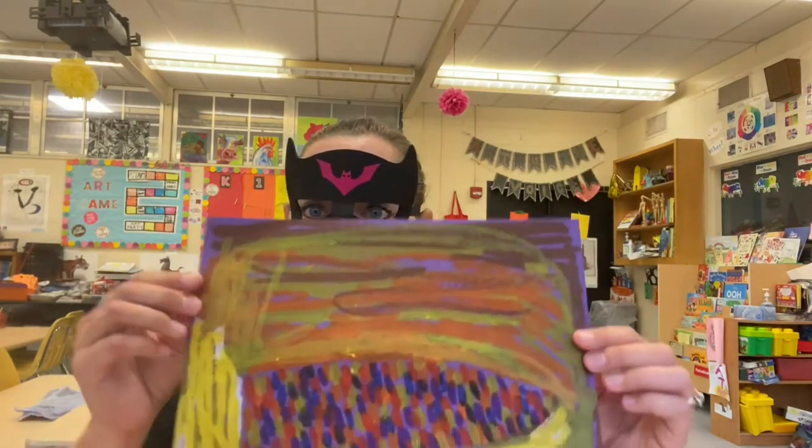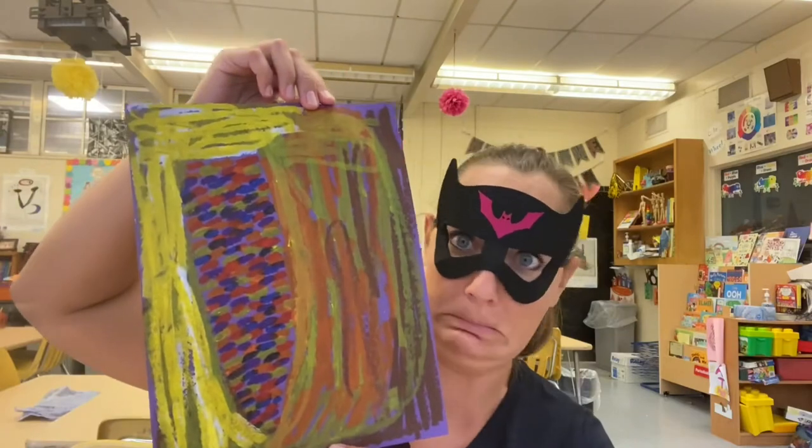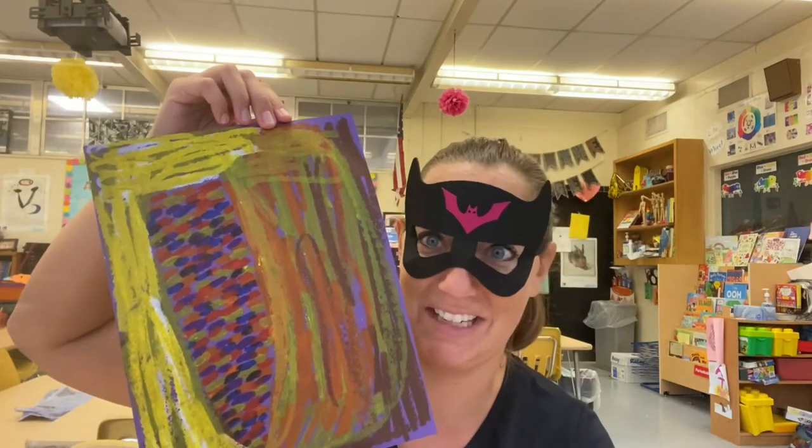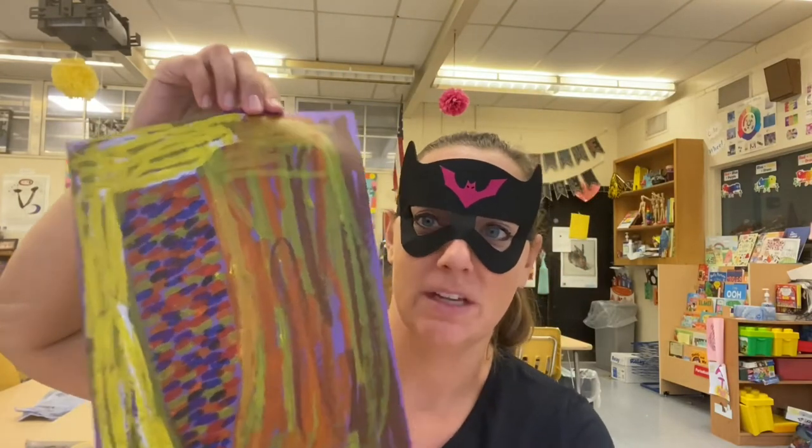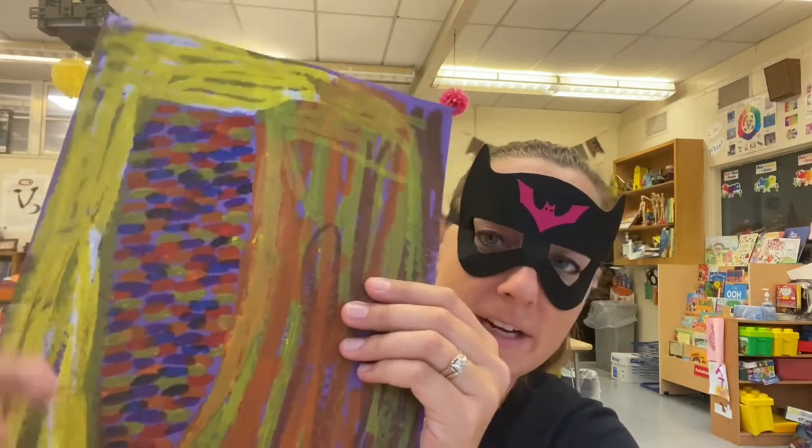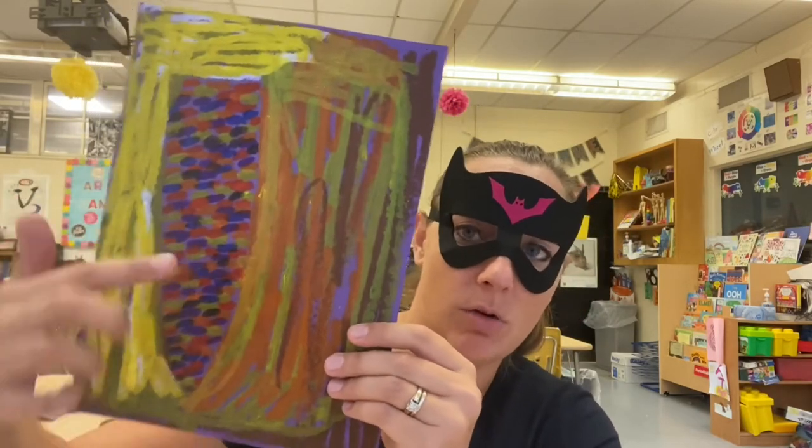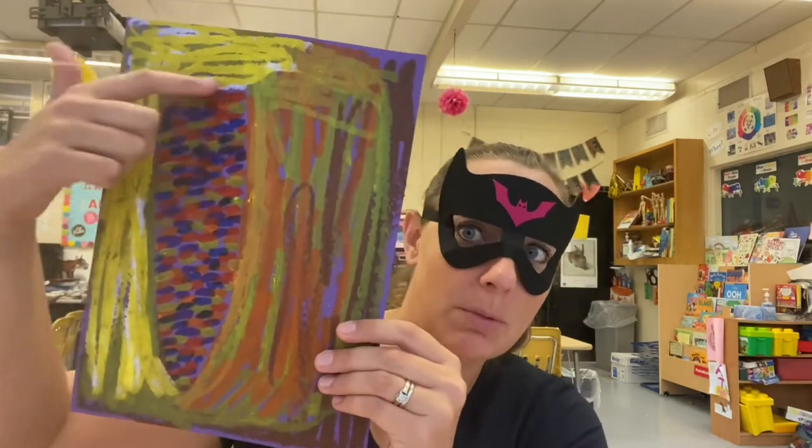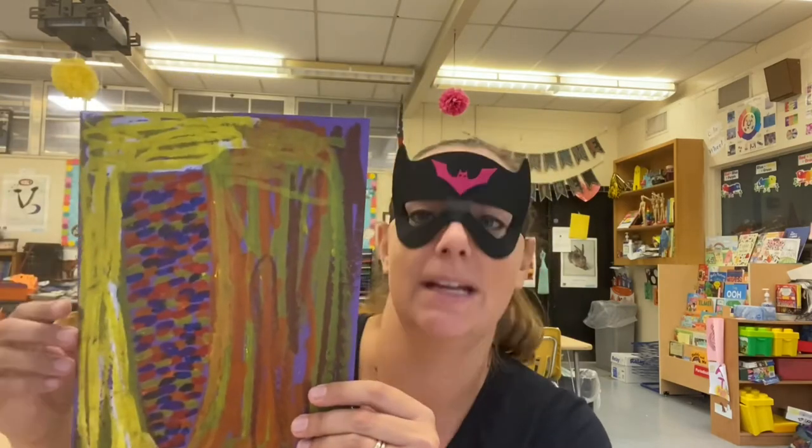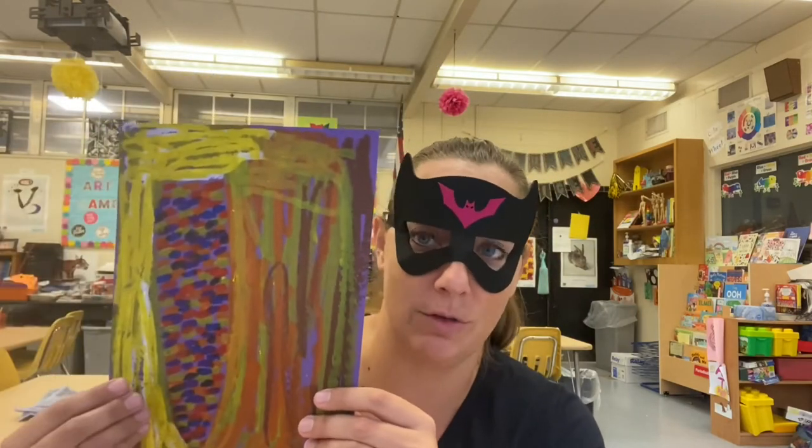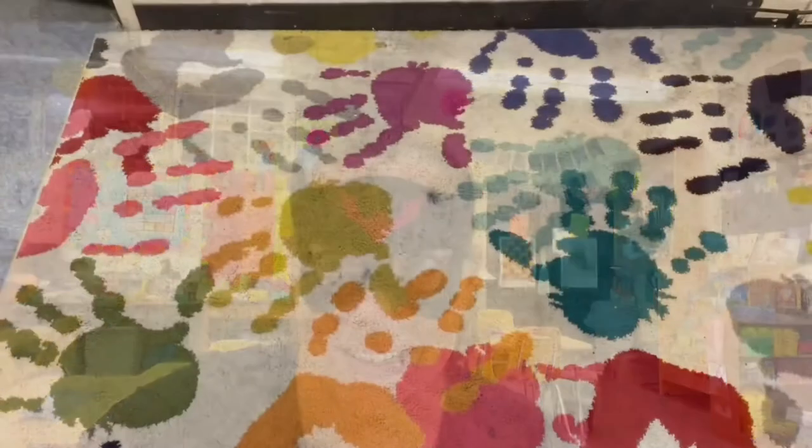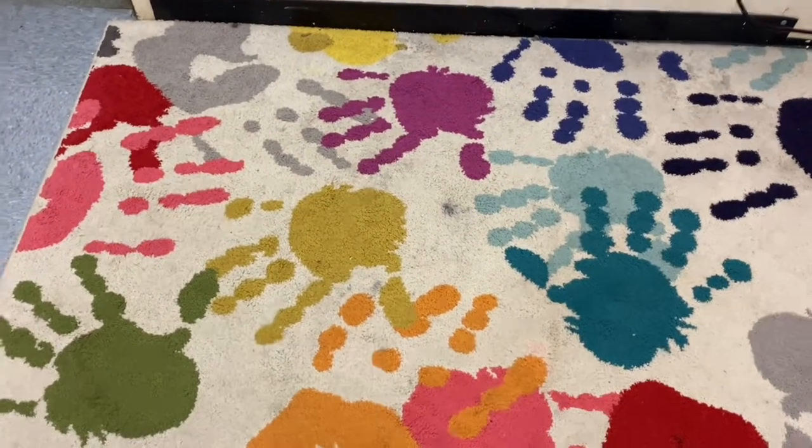Hello my most amazing artists, Batgirl here. Today we're going to be making some harvest corn. This is what mine looks like finished. This is our corn, and then next week we will cut the corn out and use this scribbly part for the husk, the papery part that goes around the corn once it's dried out. So let's get started.